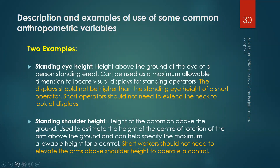Here are two examples. The first example is related to standing eye height. By definition, this is the height above the ground of the eye of a person standing erect. It can be used as a maximum allowable dimension to locate visual displays for standing operators. The principle is that displays should not be higher than the standing eye height of a short operator — short operators should not need to extend the neck to look at displays.